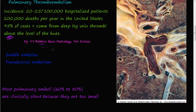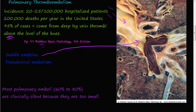This cross-section from the Robbins Basic Pathology textbook shows what is called a saddle embolus. The blood clot travels down the artery and folds over at a branch point, resembling a saddle — that's what a saddle embolus is.